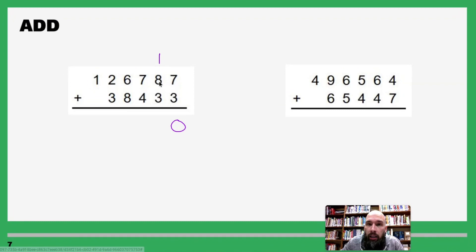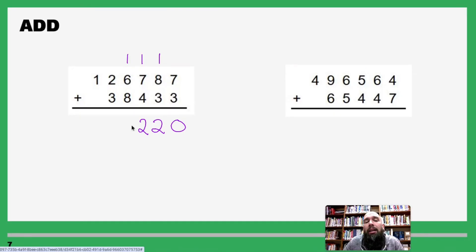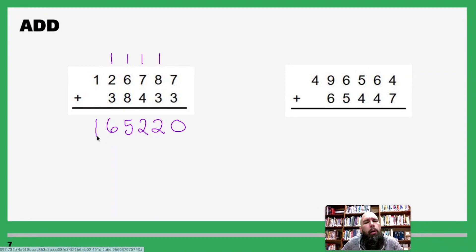Go to the ones: seven plus three is ten — write out the zero, carry the one. One plus eight is nine, nine plus three is twelve — write out the two, carry the one. One plus seven is eight, eight plus four is twelve — write out the two, carry the one. One plus six is seven, seven plus eight is fifteen — write out the five, carry the one. One plus two is three, three plus three is six — write out the six, nothing to carry over. One plus nothing is just one. Count one-two-three digits, comma, one-two-three digits. Our answer is 165,220.